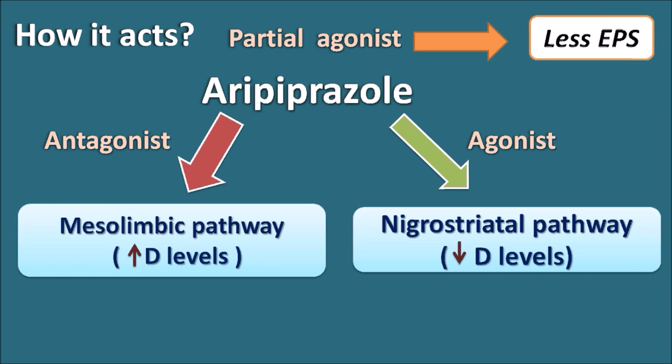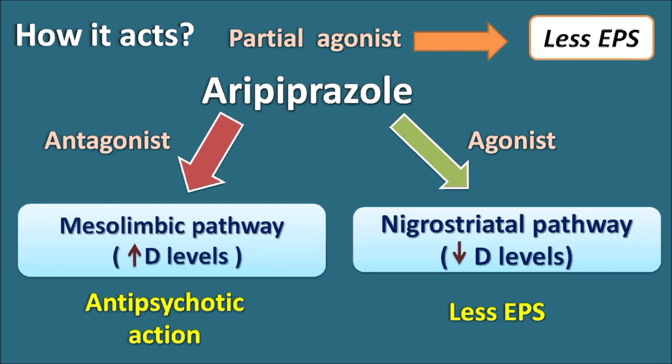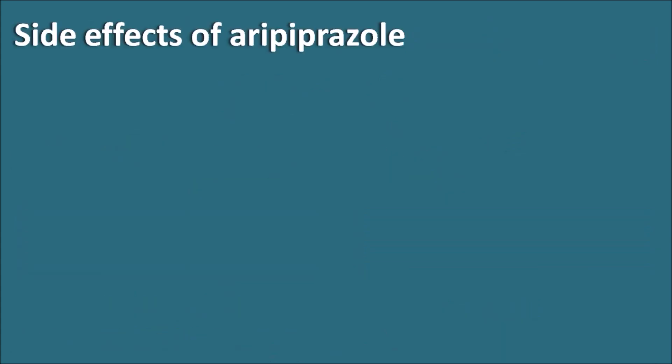As aripiprazole acts as an antagonist on the mesolimbic pathway, it produces an antipsychotic action. It also acts as an agonist on the nigrostriatal pathway, thereby increasing dopamine action, resulting in less extrapyramidal side effects. In this way, aripiprazole has a unique action, acting as both antagonist and agonist, with less extrapyramidal side effects.